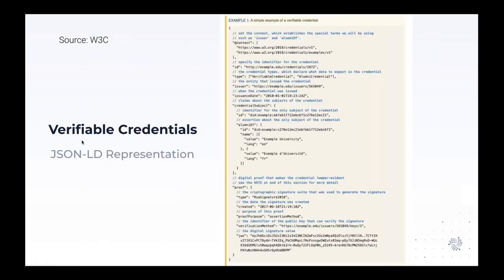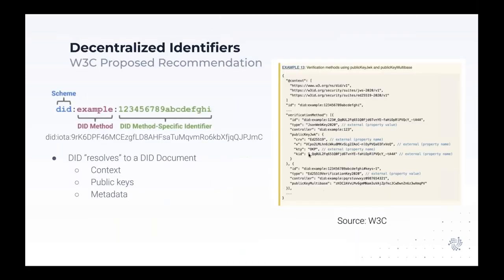In the JSON-LD representation of the credential, you have the credential ID, the type, and the issuer — here shown as an HTTP URI, but usually you will find a DID URI. With that DID URI you can know who the issuer is and go to the distributed ledger to verify. You can see the proof section: the type of proof, when it was created, the purpose of the proof, and the verification method — which points to a DID verification method found in the DID document and obtained through the IOTA distributed ledger.